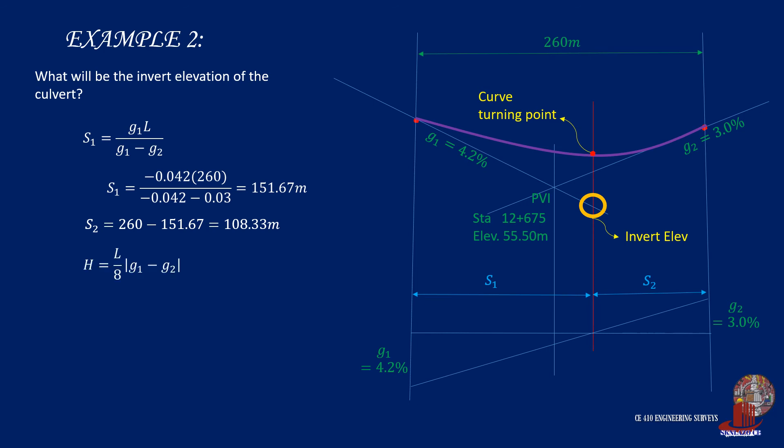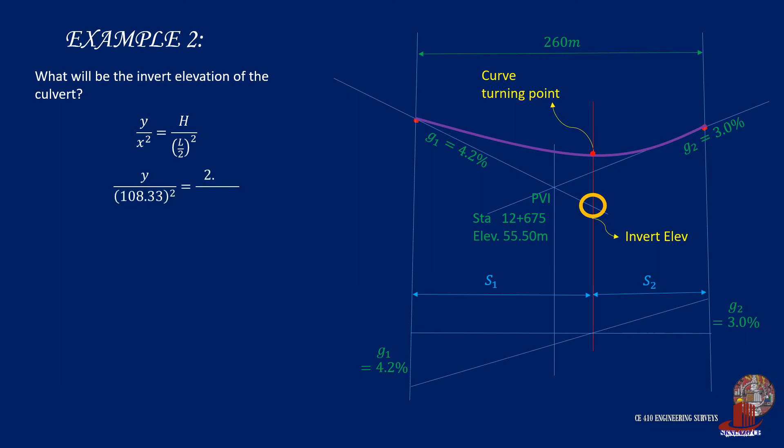We are now to use the proportionality of verticals and horizontals to identify H from the formula H equals L all over 8 times the absolute value of G1 less G2. Plug the known values to have H equal to 2.33 meters. Now plug the known values into the proportionality to come up with Y, which is 1.62 meters.